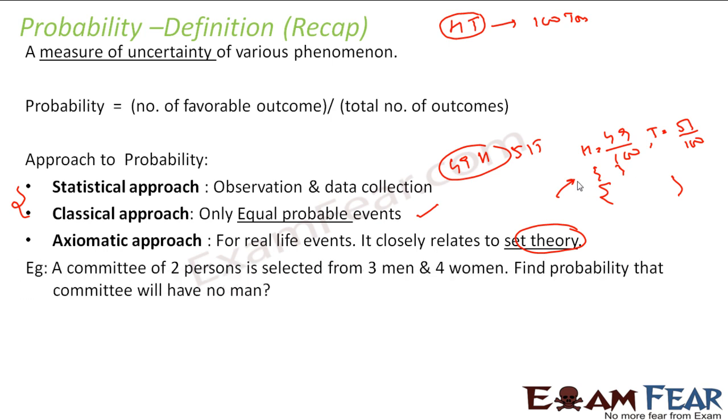So I'll just brush upon this, and one example for the axiomatic approach: if we have a committee of two persons has to be selected from three men and four women, then we have to find the committee which has no men. So in that case, we create a set of possible scenarios of selecting two persons from this committee.